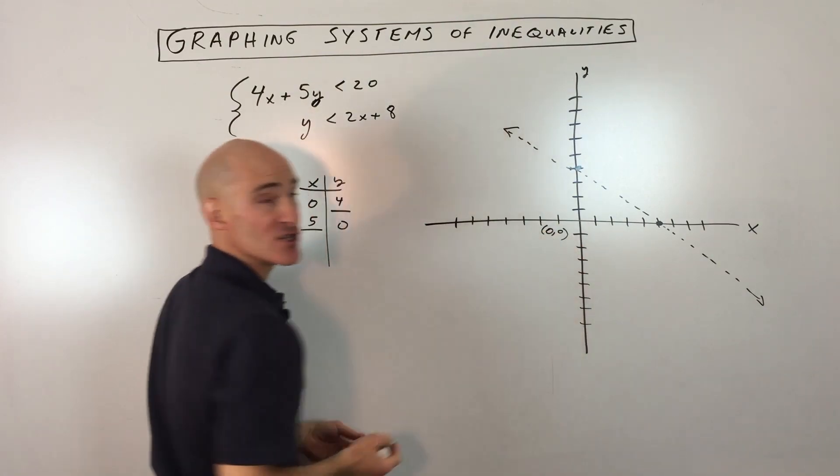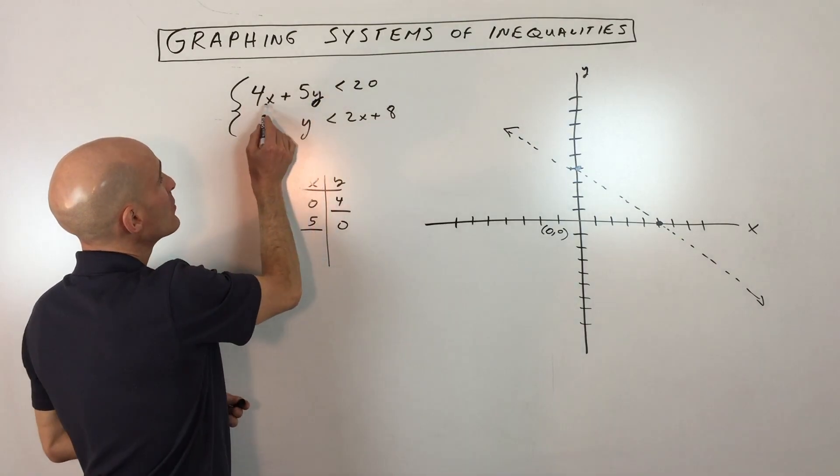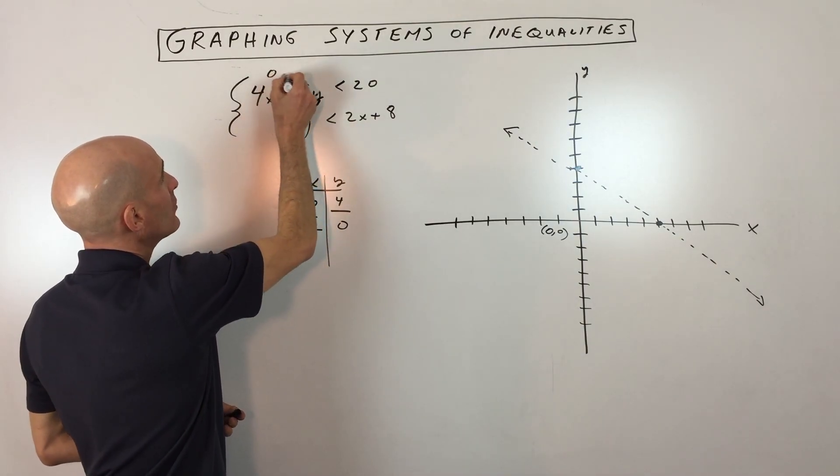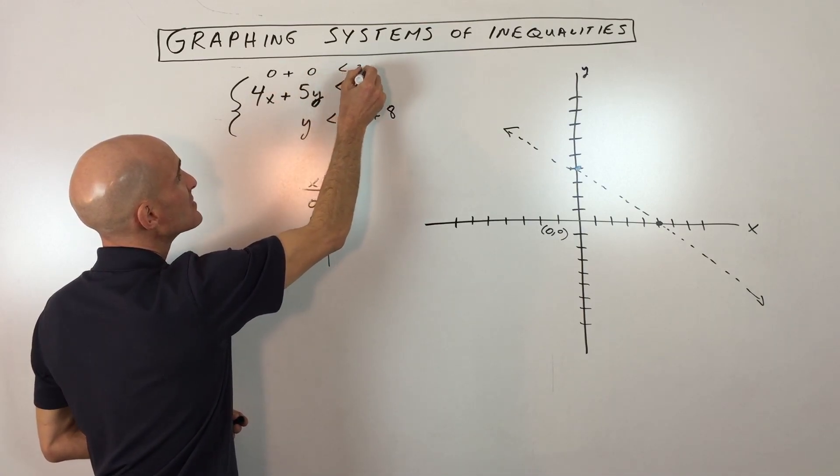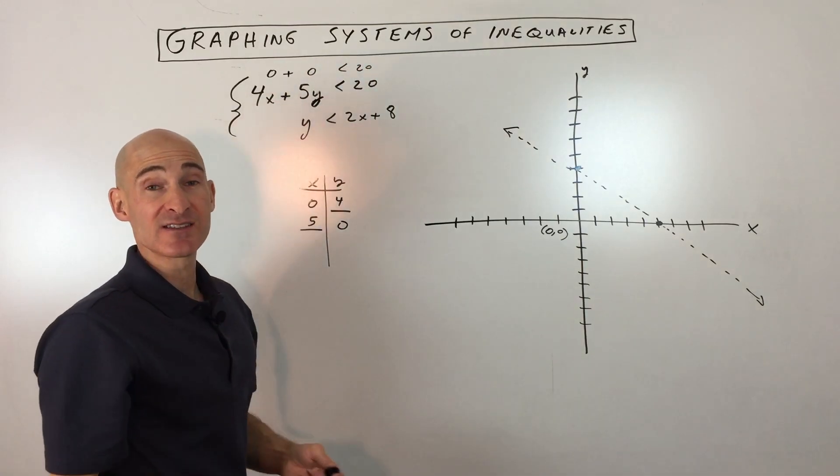A good point is the origin, zero, zero. If I put zero in for x and zero in for y, zero times four is zero, zero times five is zero. Zero plus zero is zero. Is zero less than 20? Yes, that's true.